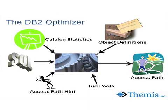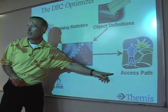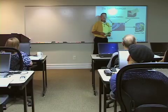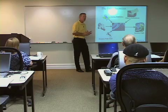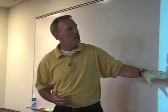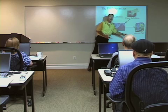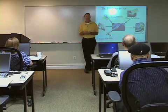For DB2 to find the most efficient way to go after data based on our SQL statement, it needs to know what the indexes and objects are and how they're defined. It needs to know the size and data distribution information on the data in the tables. And how we write our SQL statement is huge — how we structure our queries has a huge effect on the access path that DB2 takes to execute the query.